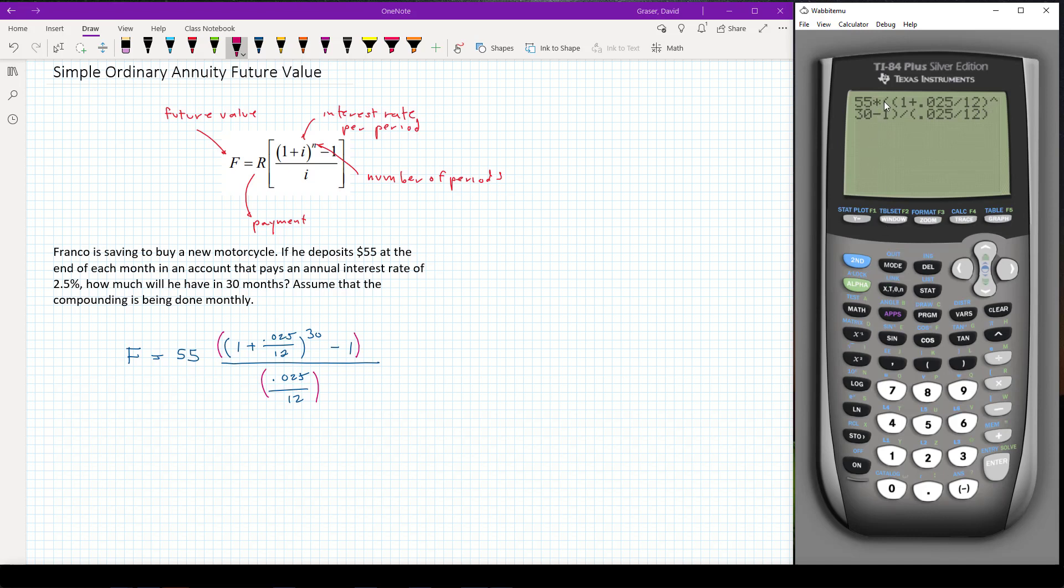So I've got the set of parentheses around the top and the bottom, and then the parentheses which I'm putting the power on. Press the Enter key, and we get $1,700 and about 83 cents if we round it to the nearest penny.